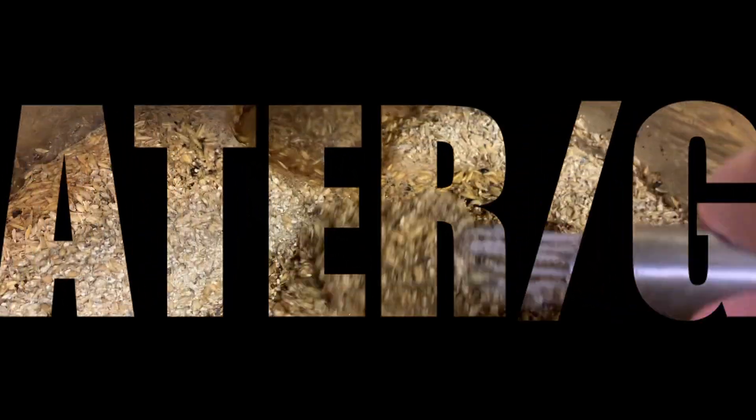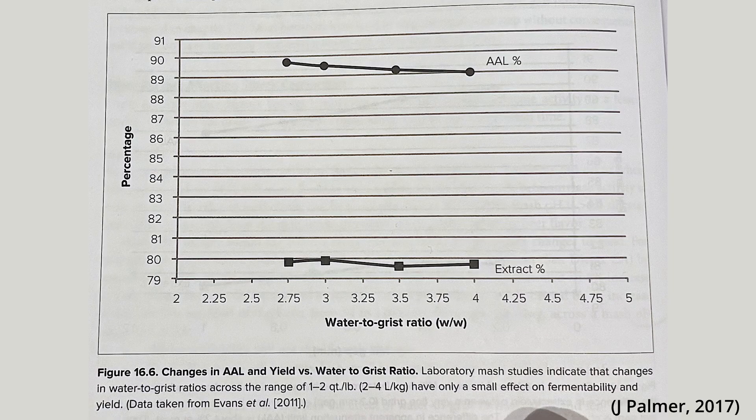Water to grain ratio. There are a lot of conflicting views on this, but the actual data seems to show that the difference between a thick and thin mash when working within a sensible range of two to four litres per kilo will have a negligible effect on yield. The main impact of doing a thinner mash in terms of efficiency is actually that you're reducing your sparge volume, which can make a bigger difference because you're not having as much water to rinse out the sugars. I use a water to grain ratio of 2.7 litres per kilo, which produces a mash thickness that's fairly easy to work with without reducing the sparge quantity too significantly.